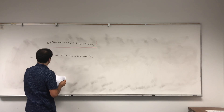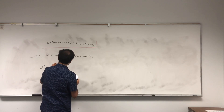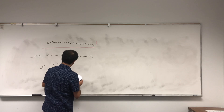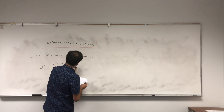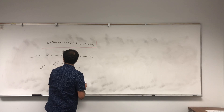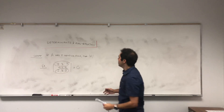Lemma: if A has two identical rows, then the determinant of A is zero. For example, if you have the matrix [2, 3, 2; 4, 1, 4; 2, 3, 2], indeed, because we have two identical rows, we get zero.